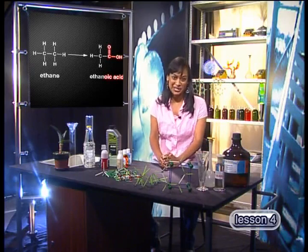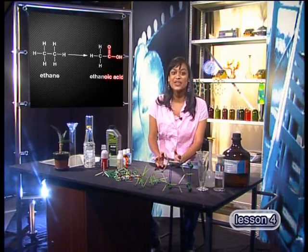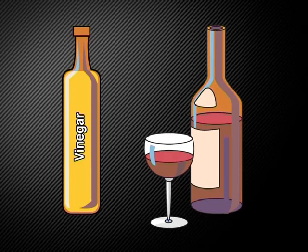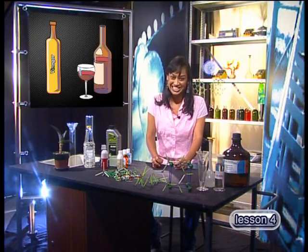This is the same acid that is made when wine is left open so that air can enter the container. Yeast and bacteria use the ethanol in the wine and oxygen from the air to make the sour-tasting ethanoic acid. This is the same process used to make vinegar — so the next time you add vinegar to your chips, think of the organic chemicals you're eating.